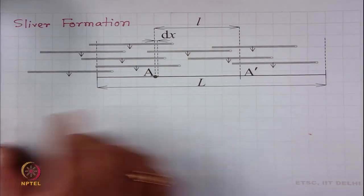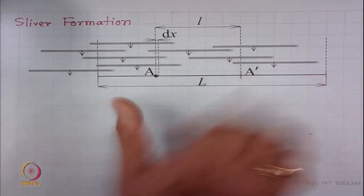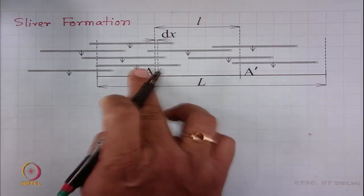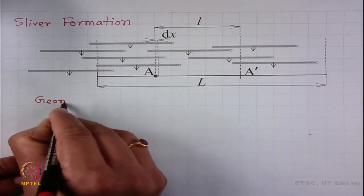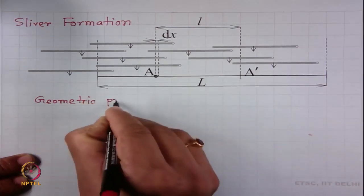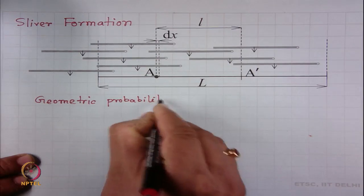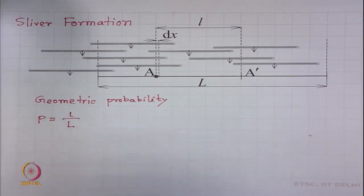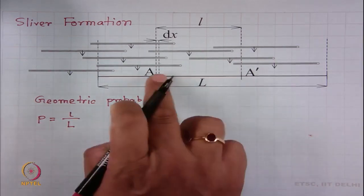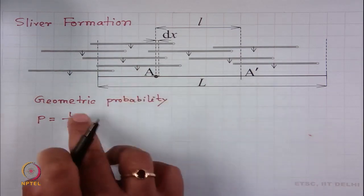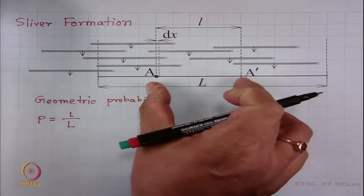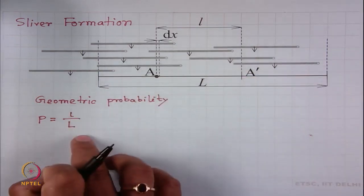The total length is capital L, the sliver length. This probability — the probability that a fiber is passing this line — refers to the so-called geometric probability. This probability must be equal to small l divided by capital L. Because if a fiber is passing the line at A, its right end must lie within a length small l, and the total possible length is capital L. So small l by capital L is the probability.